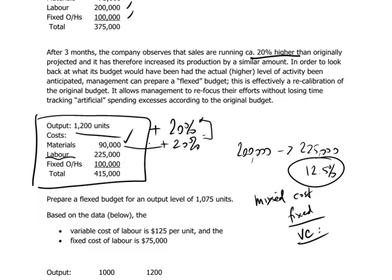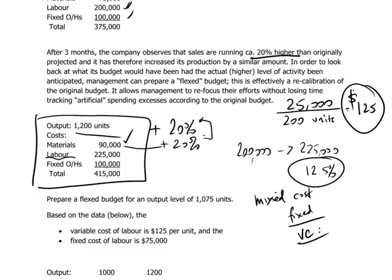Let us try to understand how to measure the increase in labor costs and explain them. We could say, for example, that in going from 1,000 to 1,200 units — an increase of 200 units — labor costs have gone up from $200,000 to $225,000. This is a $25,000 increase for 200 additional units. If we divide $25,000 by 200, we arrive at $125. This number is interpreted as the variable cost of labor: $125 per unit. For every unit increase in output, labor costs go up by $125.